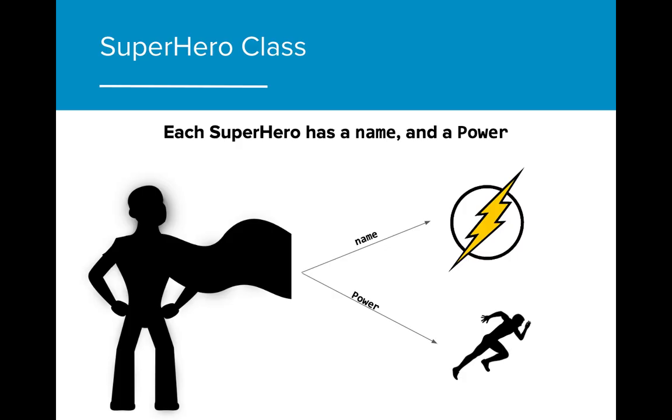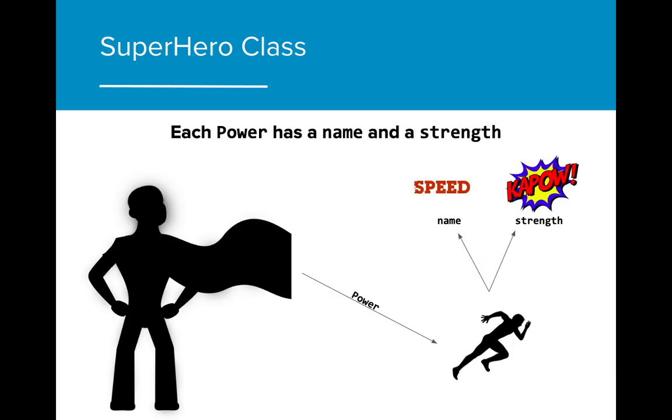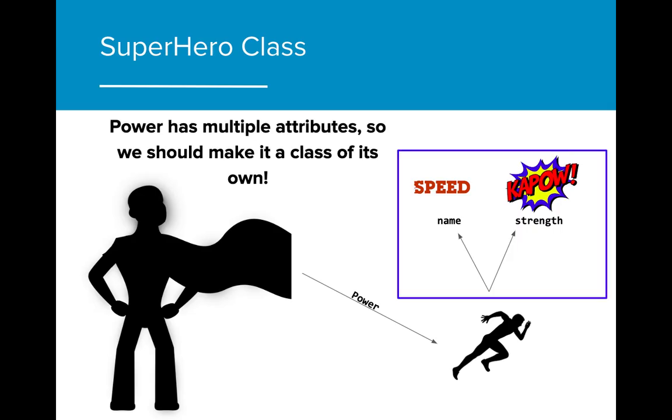We refer to this relationship between an object and its instance variables as a has-a relationship, as a superhero object has a name and a power attribute or instance variable. Each power also has its own set of attributes. A power has a name and a strength associated with it. Because power has multiple attributes, we can make a power class as well that allows us to store both the name and strength attributes in a power object.